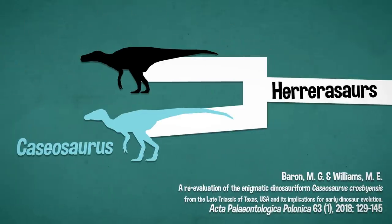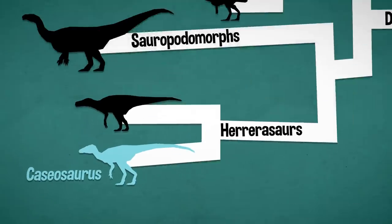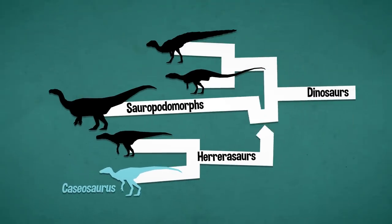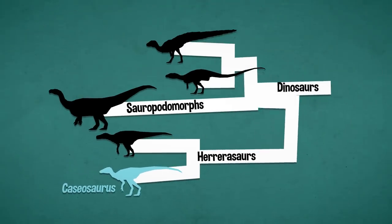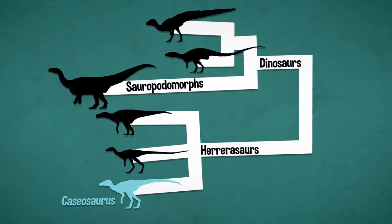As it happens, Barron and Williams evaluated the probably Herrerasaur Cassiosaurus. They recovered Herrerasaurs not only as not the sister group to Sauropodomorphs, but as the sister group to dinosaurs. And also Saltopus as a Herrerasaur, which is neat.